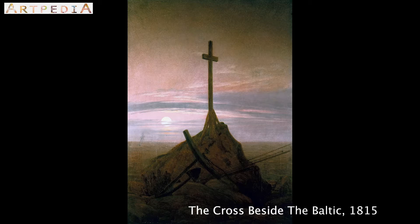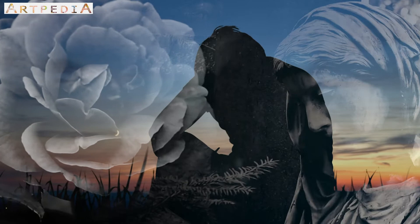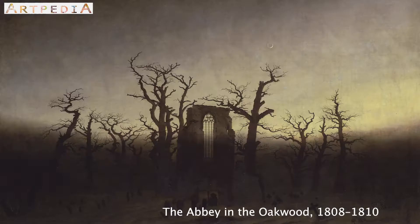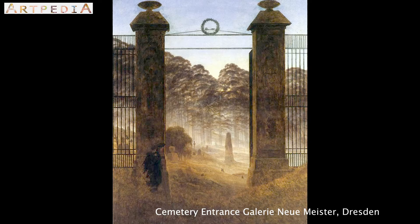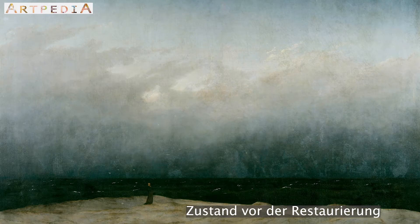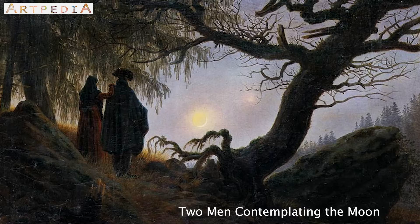His landscape paintings had an aura of mystique and radiated the sacredness of nature, even a reverence of religious themes. Born the sixth of ten children in a Lutheran home, Friedrich had a traumatic childhood, with his mother, two sisters, and a younger brother all passing before he turned 18. Those experiences can be seen in his works as loneliness, melancholy, godliness, and a blend of religious worship and the sublime of Mother Nature.